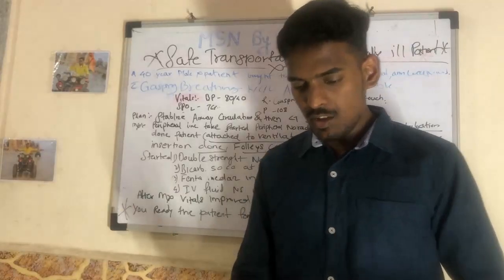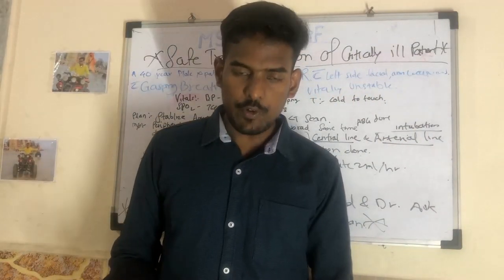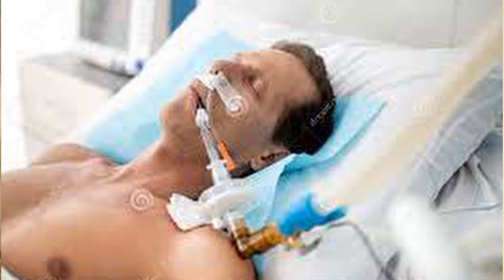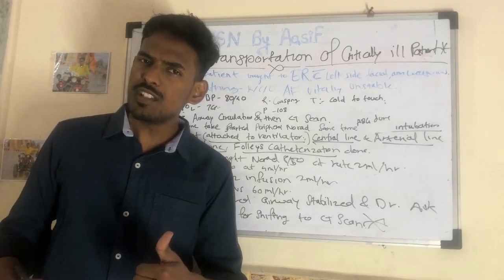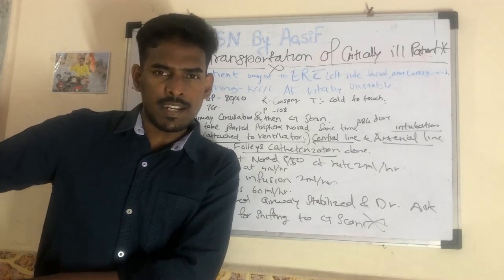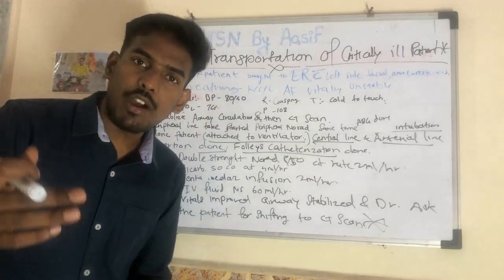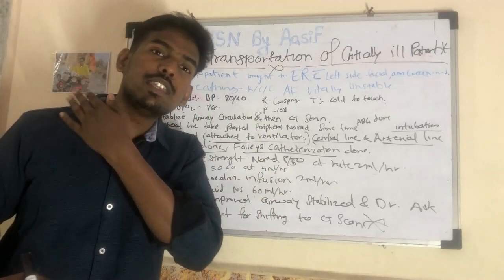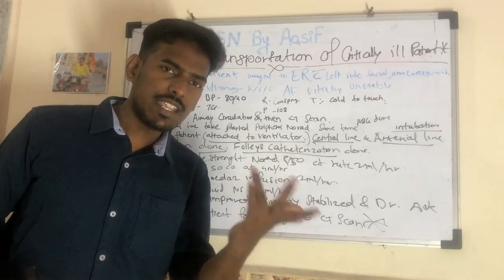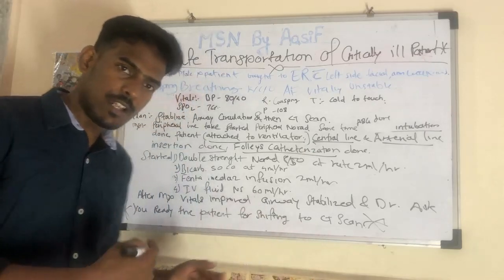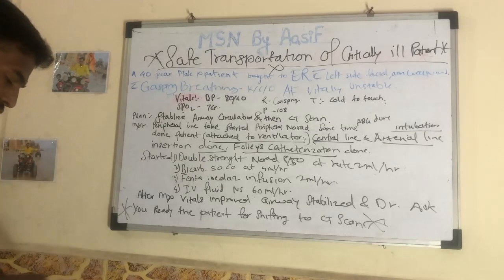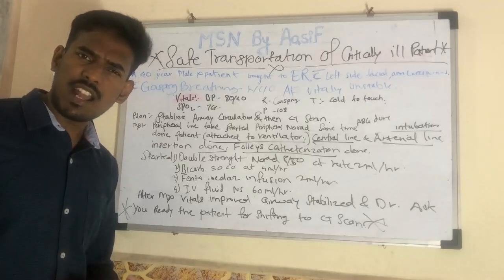Meanwhile, another doctor obtained consent for intubation, central line, and arterial line. The doctor came to the head end, intubation was done, and we attached the ventilator to the ET tube. Then the doctor went to the other side for the central line - all equipment was kept ready and central line insertion was done. Through the central line we started double strain norad, which is 8 by 50 - 4 ampoules in 50 ml NS - at 4 ml per hour on the infusion pump.